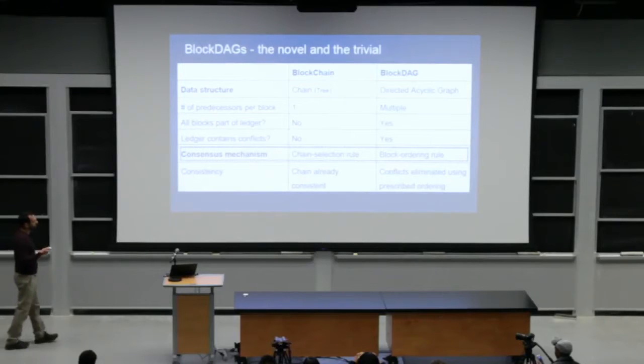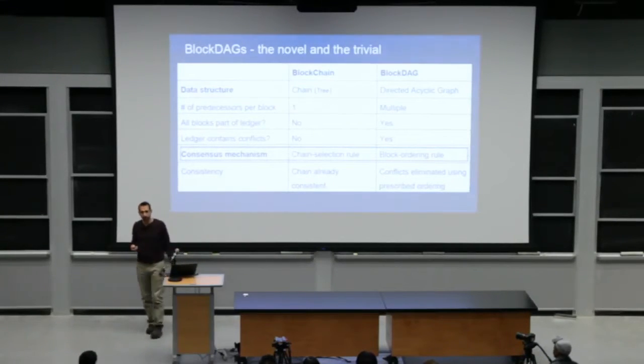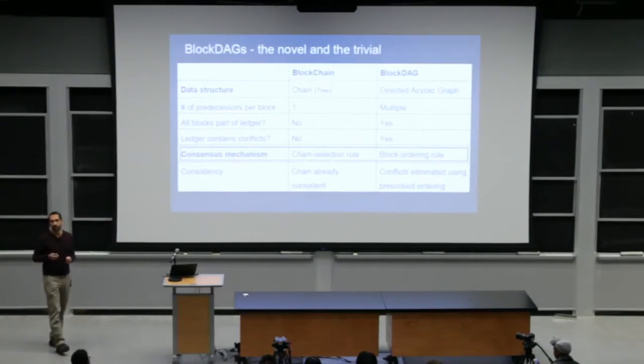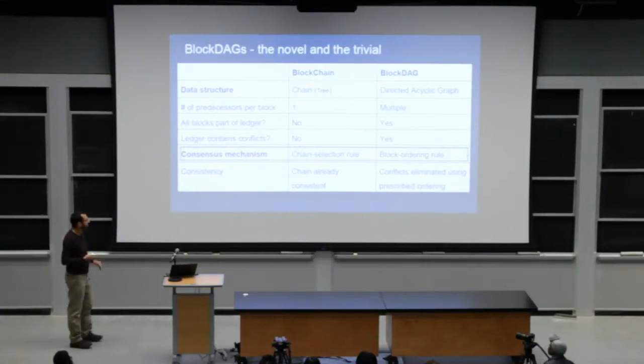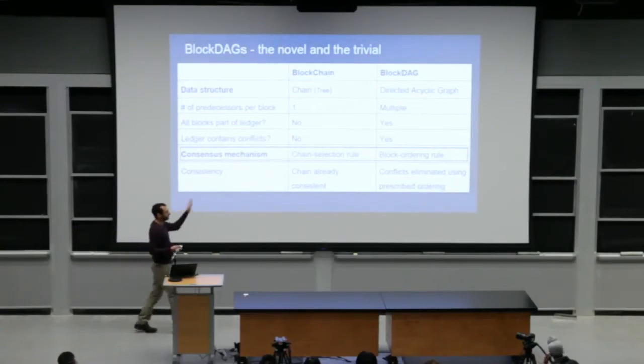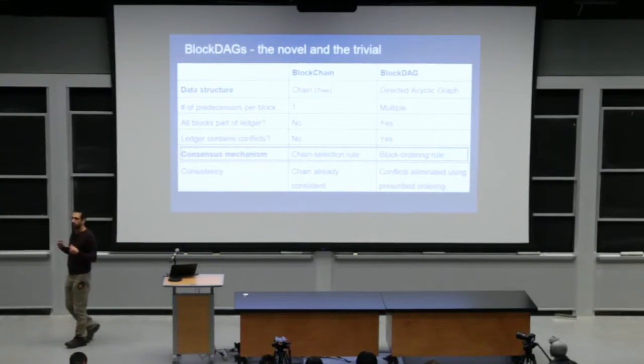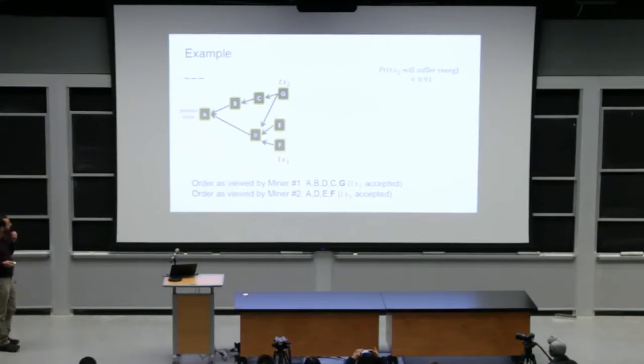The way Satoshi arrived at consensus is by specifying a chain selection rule, specifying what is the chain that should be considered the valid state of the ledger. And this chain is consistent by construction. Every block is consistent with history. In contrast in a dag, we incorporate all blocks. So the consensus mechanism will look differently. It will look as a rule to order blocks to say what the order over blocks is. I'll give an example shortly.